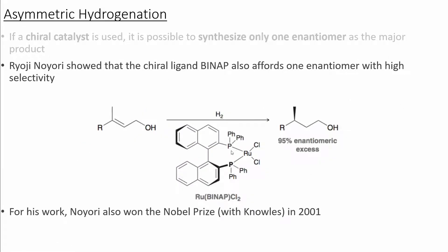This ruthenium catalyst contains the BINAP ligand, which is also a chiral ligand. This allows us to convert an achiral starting material into a chiral product with high enantiomer excess when the reaction is complete.